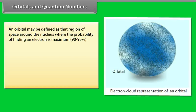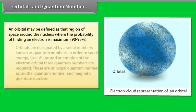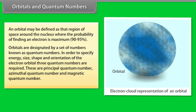An orbital may be defined as that region of space around the nucleus where the probability of finding an electron is maximum. Orbitals are designated by a set of numbers known as quantum numbers. In order to specify energy, size, shape, and orientation of the electron orbital, three quantum numbers are required: the Principal Quantum Number, the Azimuthal Quantum Number, and the Magnetic Quantum Number.